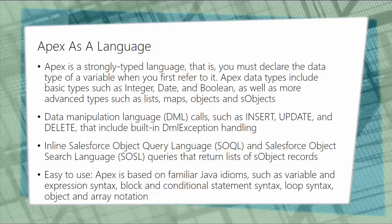As a language, Apex is strongly typed, which means you must declare the data type — integer, string, enum, and so on — when you first refer to a variable. Apex data types include basic types like integer, date, and boolean, as well as more advanced types such as lists, maps, objects, and sObjects.